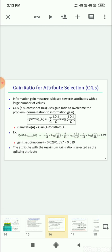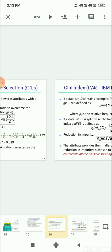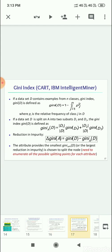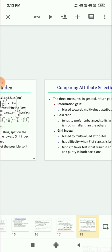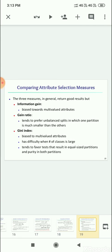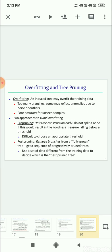So the attribute with the maximum gain ratio is selected as the splitting attribute for C4.5 algorithm. So that is the difference between our previous ID3 algorithm and this C4.5 algorithm. The information gain is biased towards multi-valued attributes, whereas gain ratio tends to prefer unbalanced splits in which one partition is much smaller than the others.